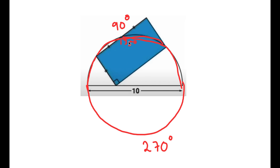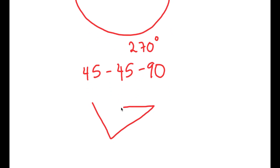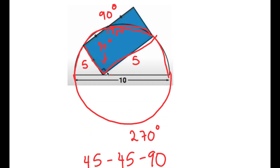Because this part is 135 degrees, this part here is 90 degrees — we have a 90 degree angle right here. Because this whole thing is 10, this means this side is half of 10, which is 5, and this side is also 5. For a 45-45-90 triangle, we have two sides with x and the hypotenuse is x√2, meaning the top of this is 5√2.